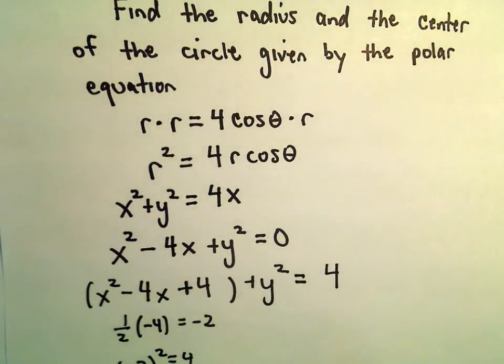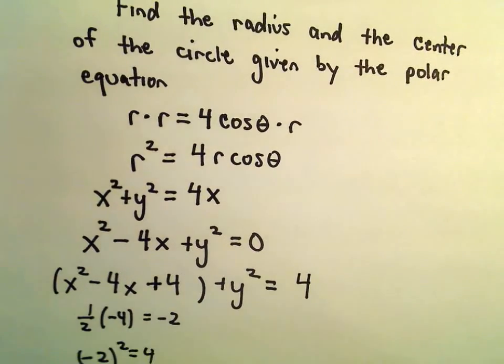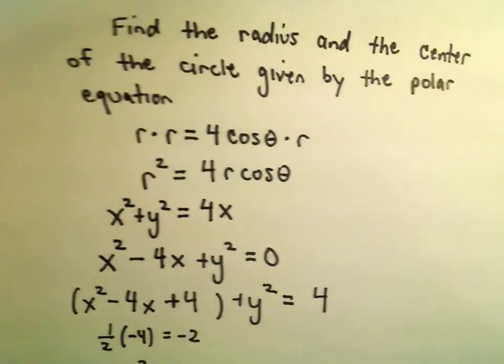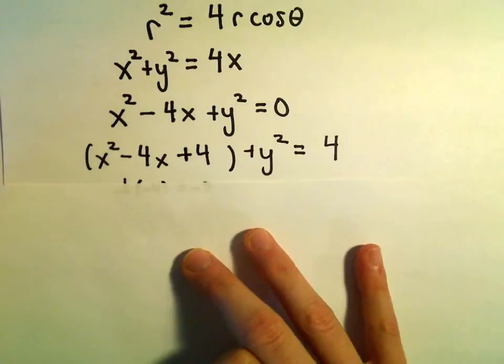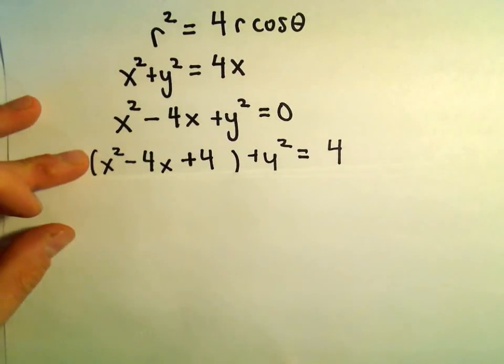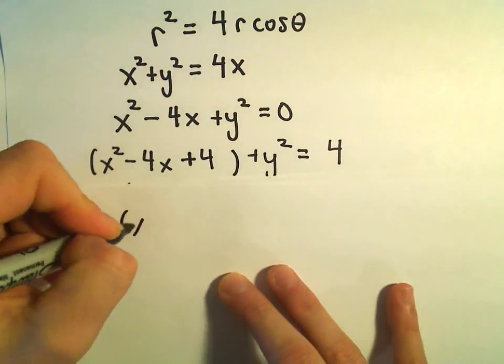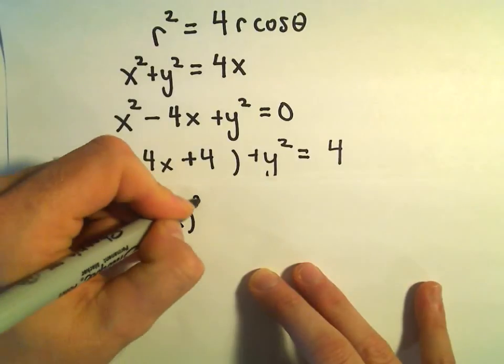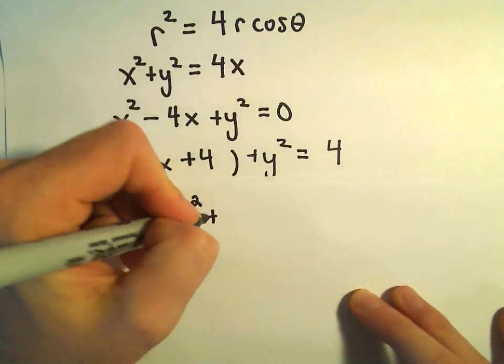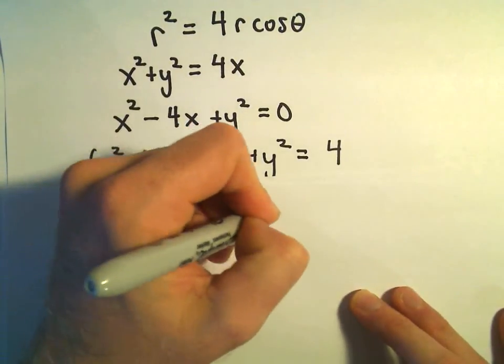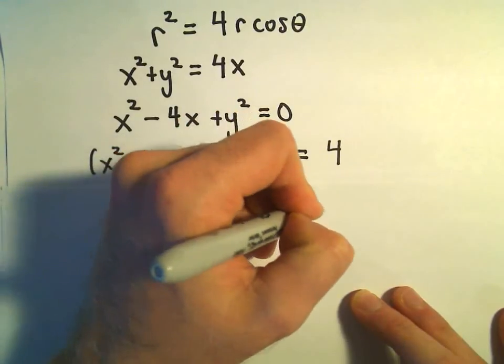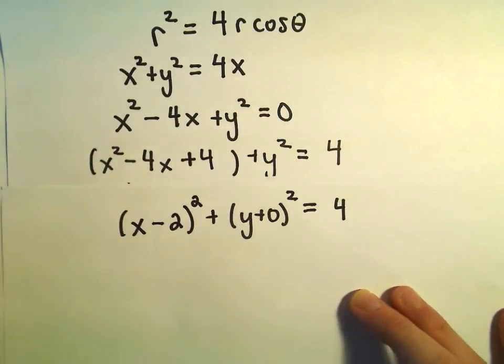And now what I'm going to do is just factor the left side a little bit. If we factor the left side, we're going to have x minus 2 quantity squared plus, well, we could always write this as y plus 0 squared equals 4.